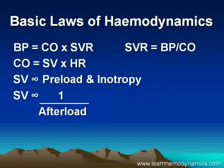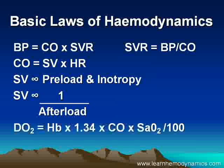Stroke volume is inversely proportional to the afterload. If the afterload on the heart increases, then stroke volume will tend to go down. Conversely, reducing afterload increases stroke volume. And finally, the most important formula in hemodynamics is oxygen delivery, DO2, which is the product of hemoglobin concentration times 1.34 — the amount of oxygen that one gram of hemoglobin can carry — times cardiac output, times oxygen saturation.